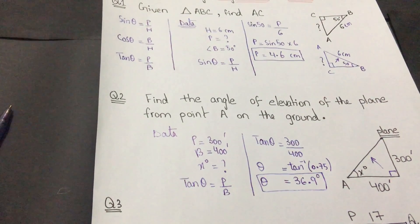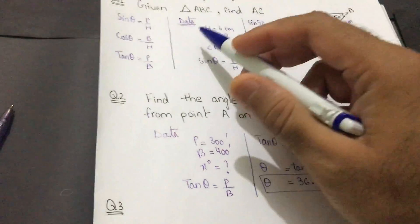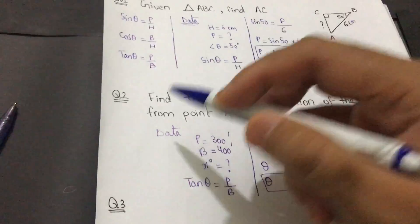We can find the missing lengths and sides of a right angle triangle by trigonometric ratio. Remember the song: some people have curly brown hairs through proper brushing.